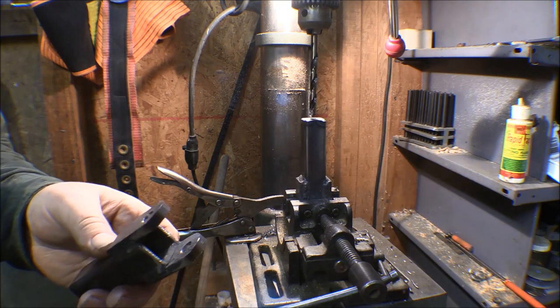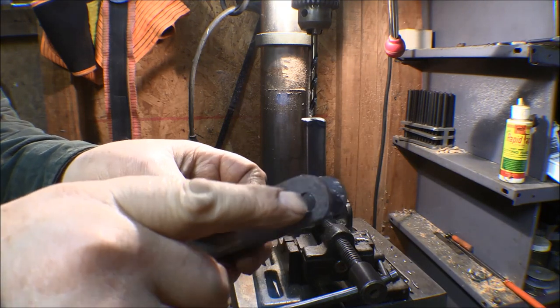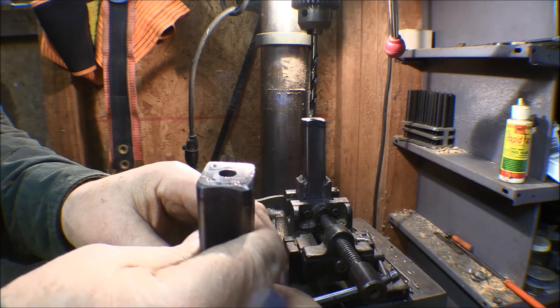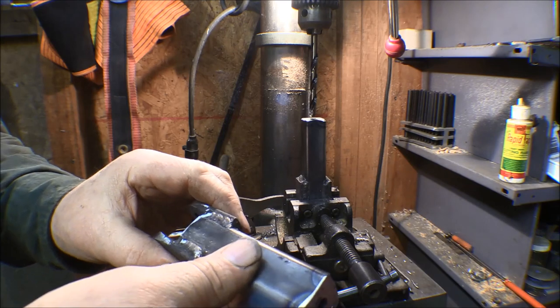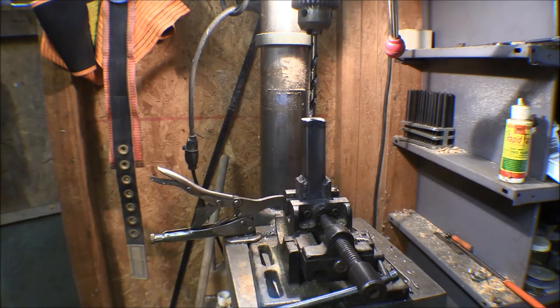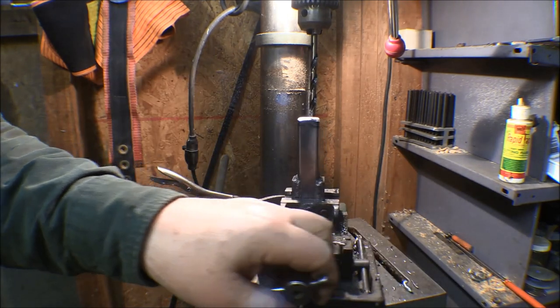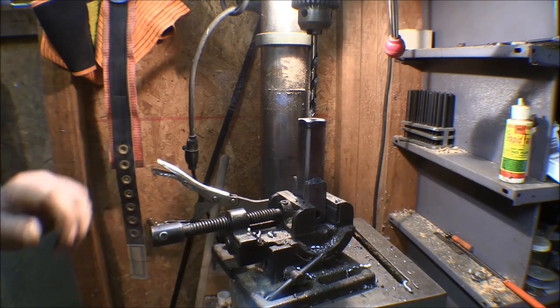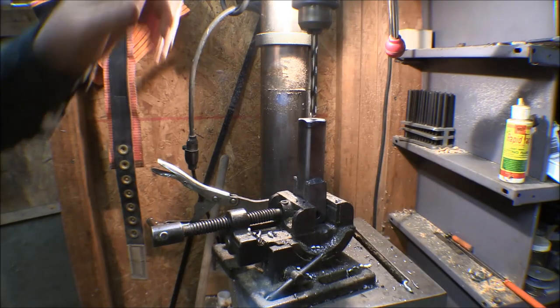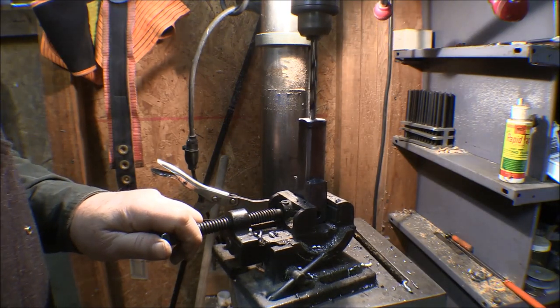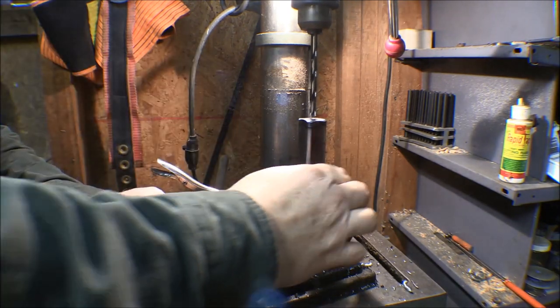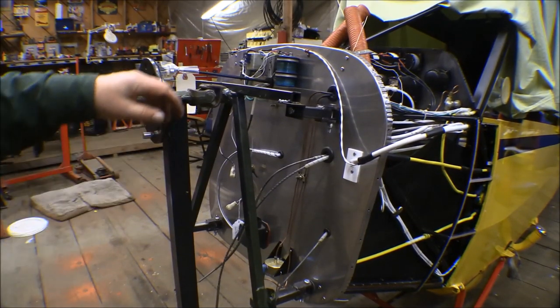I took these over to the disc sander and radiused off these ends here on these tabs and then flattened out this end here where the bolt's going to go that I just welded in there. Those look a lot better now. Just setting up on the drill press here so I can just clean those holes out and just make sure they're all okay. Alright, that worked pretty good.